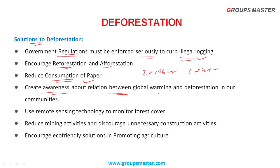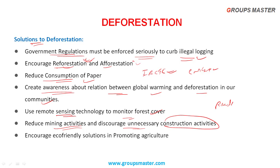Create awareness about the relation between global warming and deforestation in communities, especially in developing countries like India. Use remote sensing technology to monitor forest cover regularly - to track where forest cover is declining and take up afforestation and reforestation activities accordingly. Afforestation should be carried out on barren lands. Reduce mining activities and indiscriminate unnecessary construction activities. Increase eco-friendly solutions in promoting agriculture.